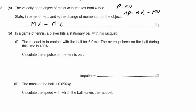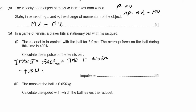Part B: in a game of tennis, a player hits a stationary ball. The racket is in contact with the ball for 6 milliseconds, and the average force during this time is 400 newtons. Calculate the impulse on the tennis ball. Impulse equals force × time = 400 N × 6.0 × 10⁻³ s = 2.4 newton seconds. Remember the units: newtons multiplied by seconds.